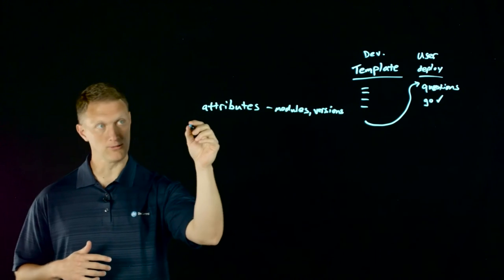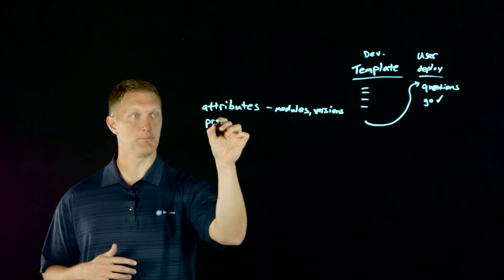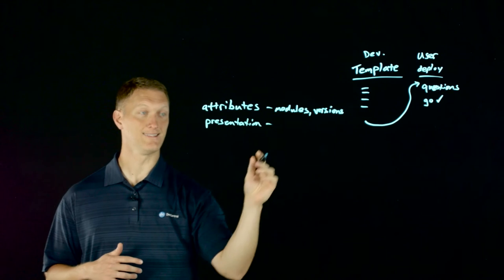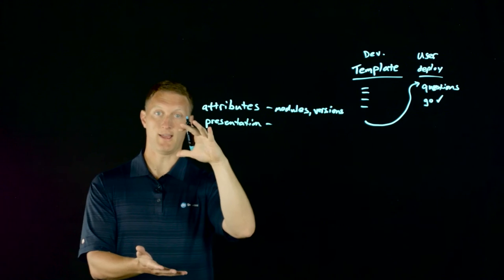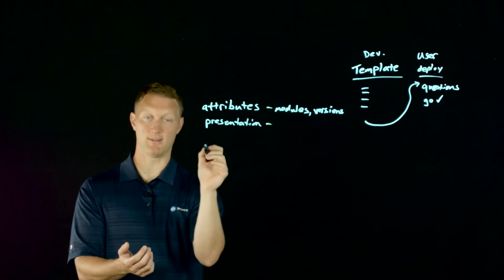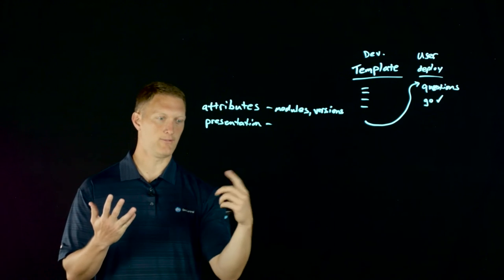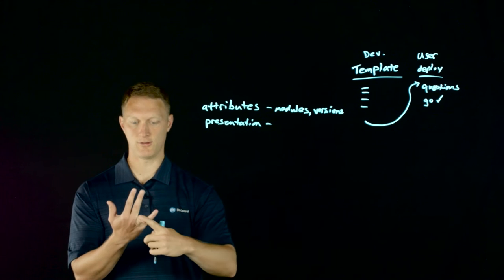After the attributes, we're going to come into a presentation section. The presentation section is literally the page that asks the different questions. Hey user, do you want to offload your SSL to the BIG-IP?